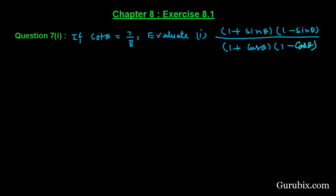Welcome friends. Let us solve the first part of question number 7 of Exercise 8.1 of Chapter 8. The question says: if cot θ equals 7 over 8, evaluate (1 + sin θ)(1 − sin θ) over (1 + cos θ)(1 − cos θ). Let us see how to solve this question.